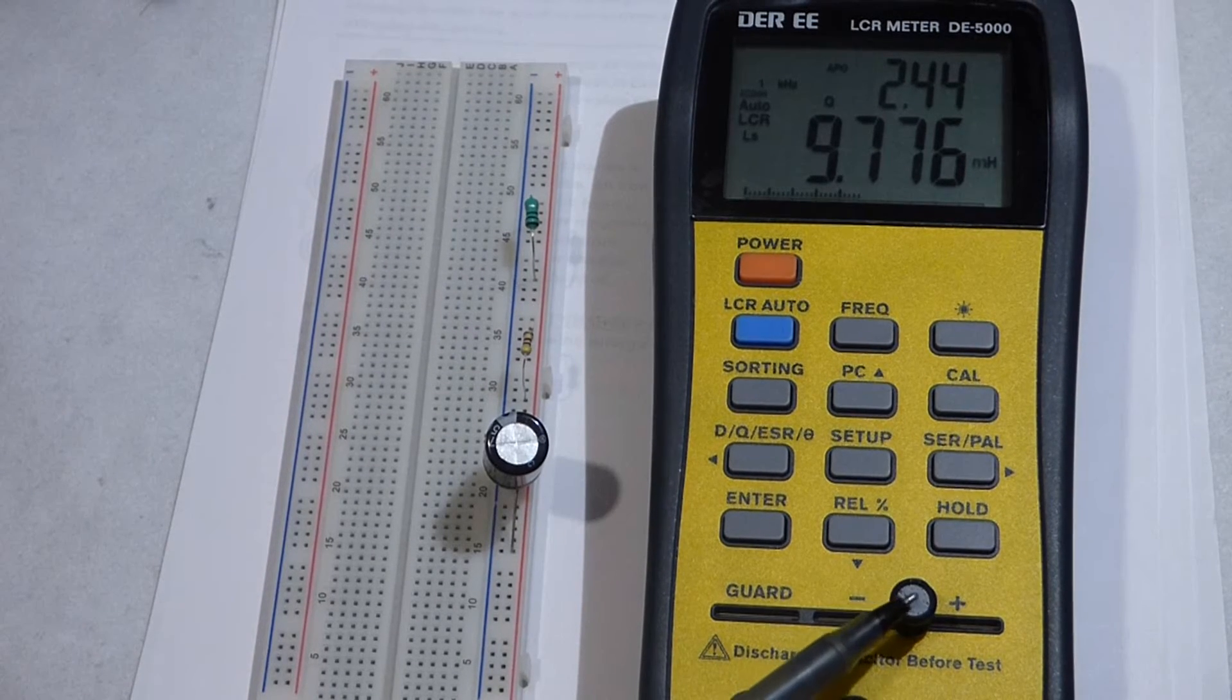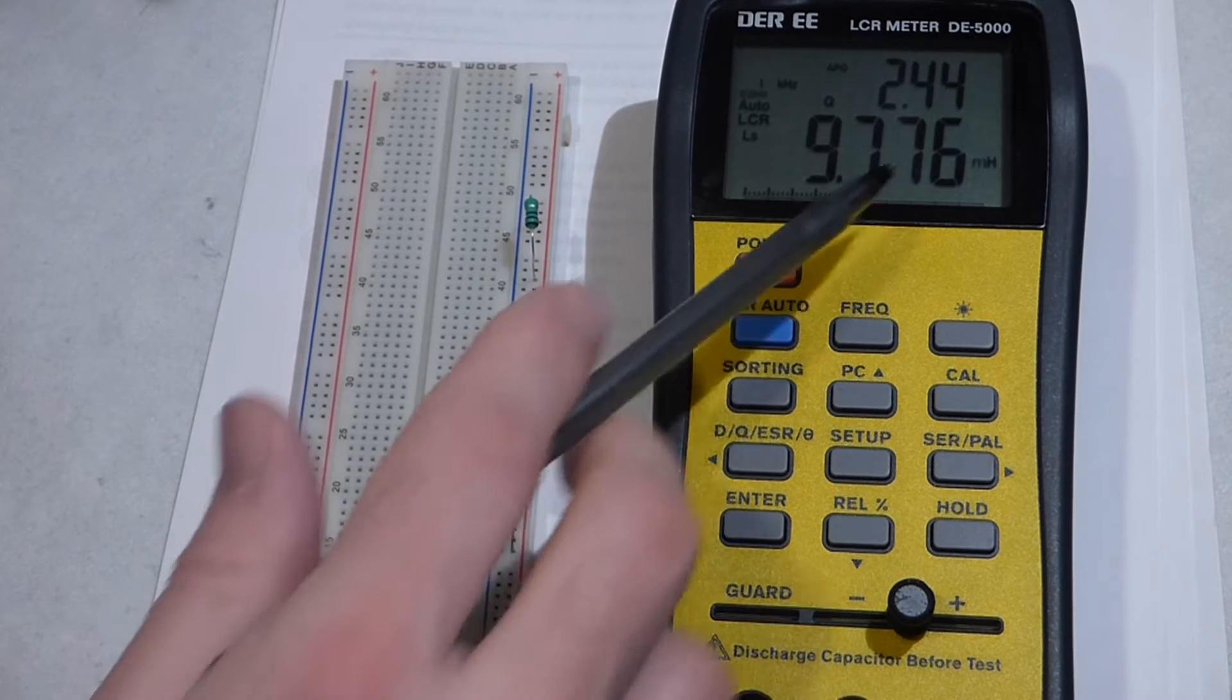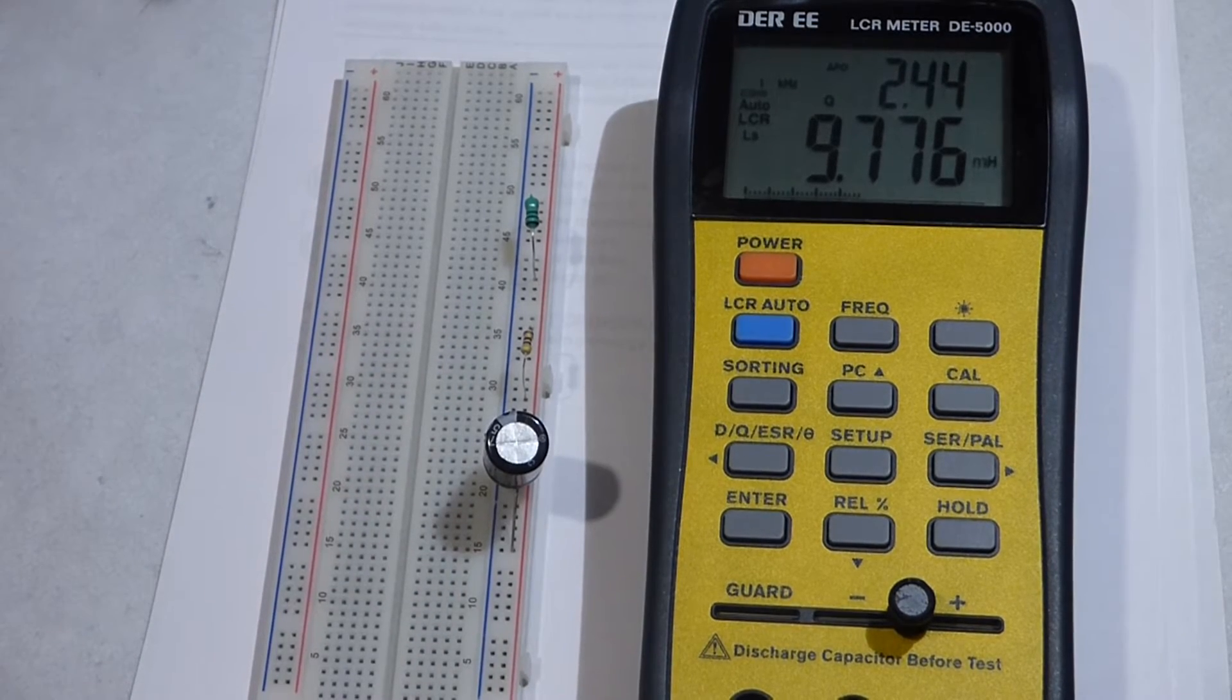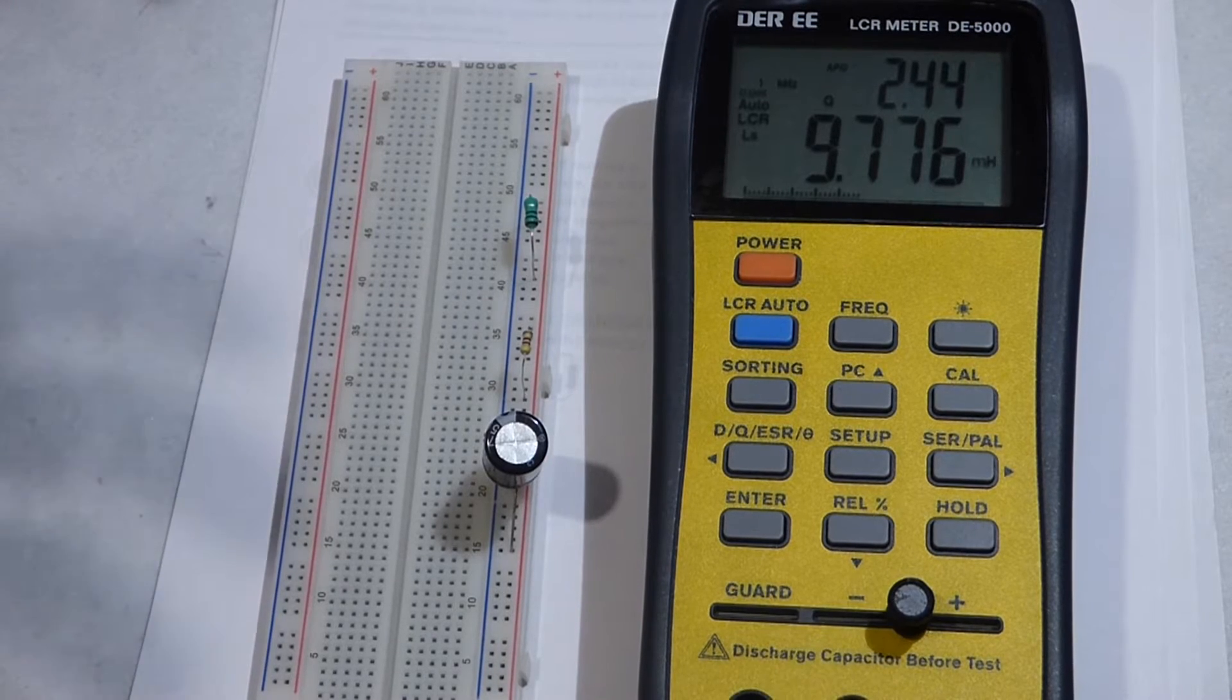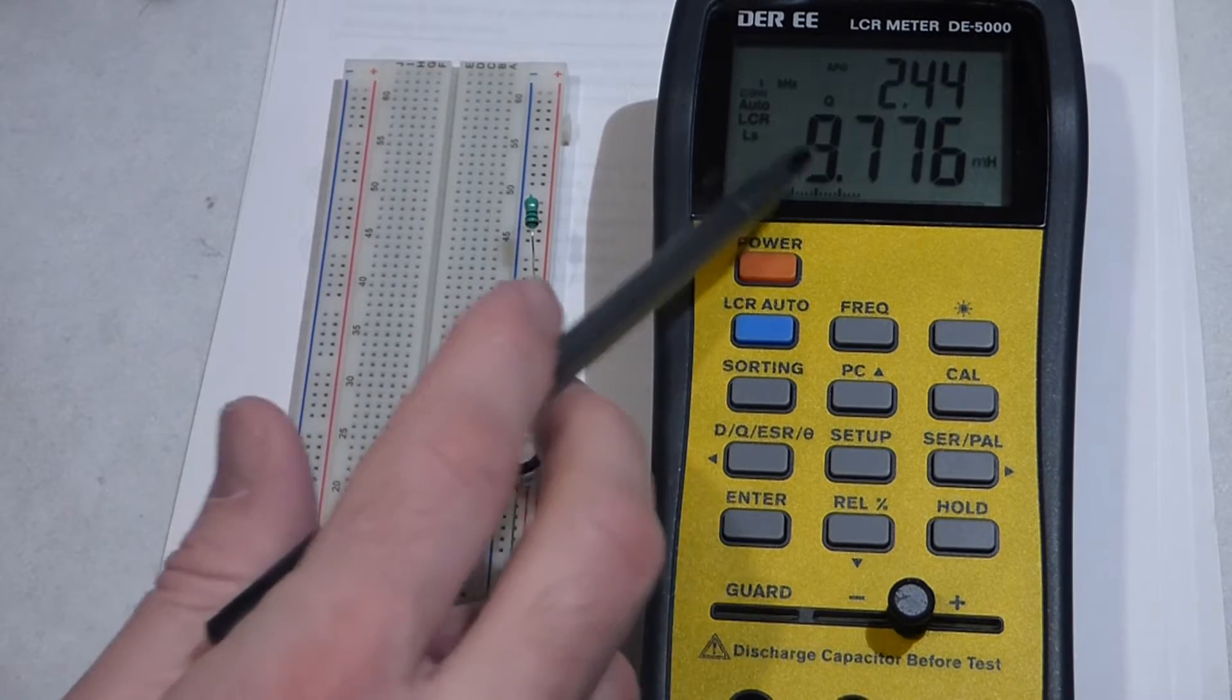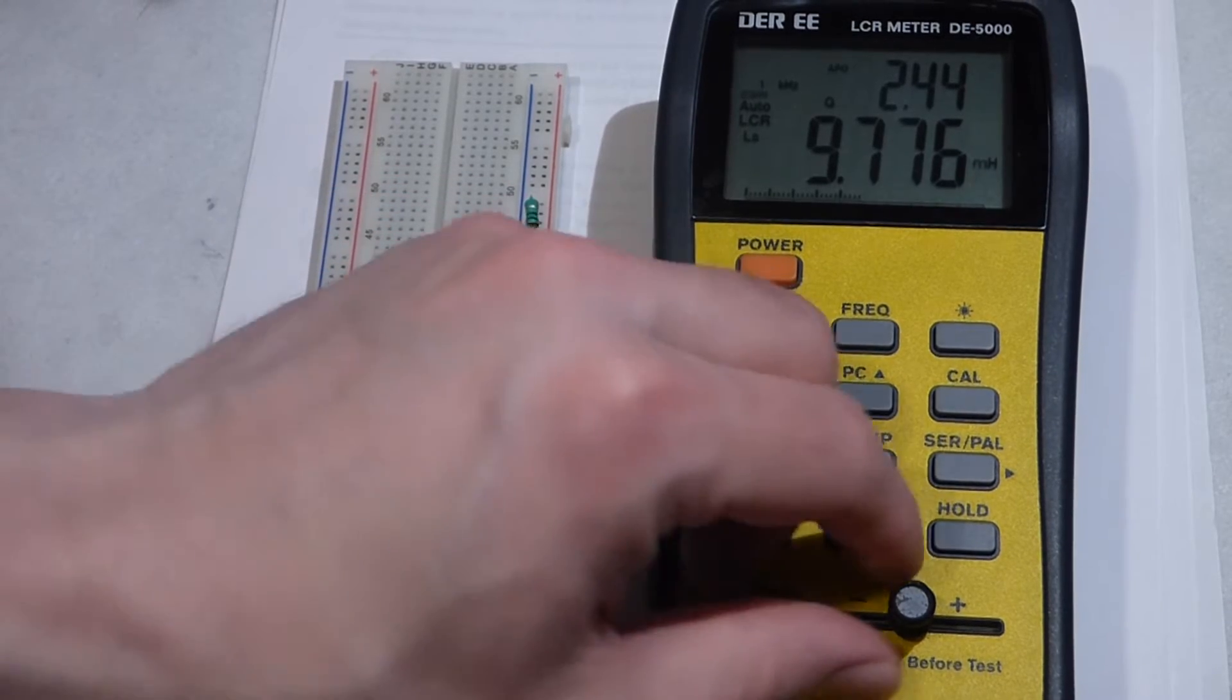When I ordered these, I didn't know if the seller wrote 'm' where it should be micro, but they looked like larger value inductors, so I felt pretty safe that they were 10 millihenry. Here you can see it's slightly smaller than 10 millihenry, but that's what it's rated for and we expect that.